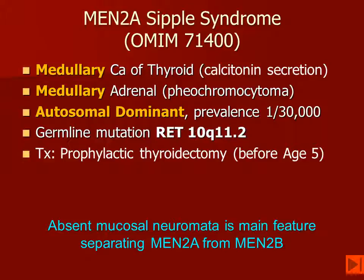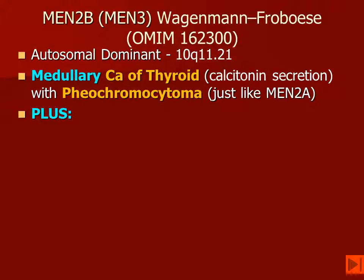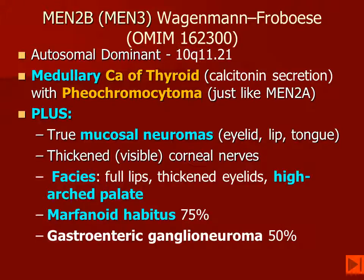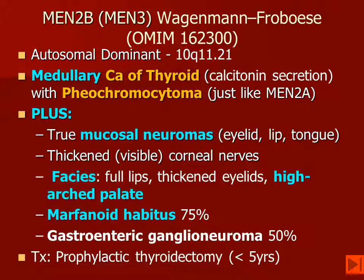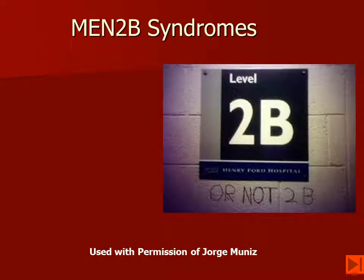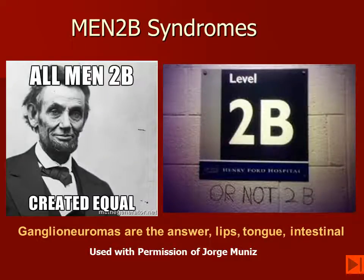Sippel's disease is the eponym for MEN2A, and Wagenman-Frobose is the eponym for MEN2B, also called MEN3. In MEN2B, patients have mucosal neuromas, unusual faces with a high arched palate, a marfanoid habitus, and may also have gastroenteric ganglioneuromas. The treatment for patients with any MEN2 mutation is a prophylactic thyroidectomy, typically performed under the age of 5.